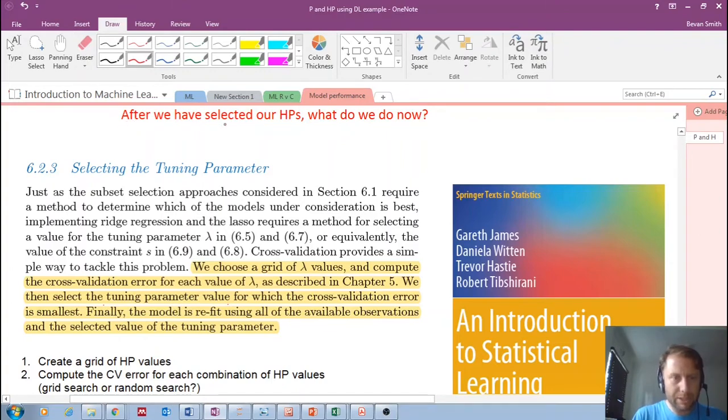After we have selected our optimal hyper parameters, what do we do now? You go through the whole process of cross-validation, set up a hyper parameter grid, etc., then what? I'm going to do a quick recap of how to find the hyper parameters and then answer this question: what do we do now?